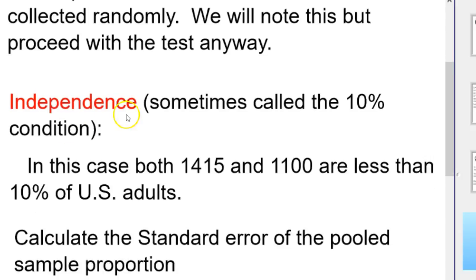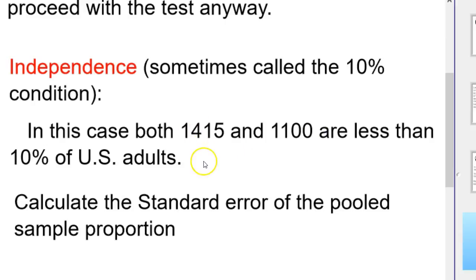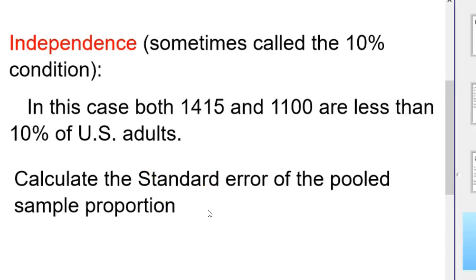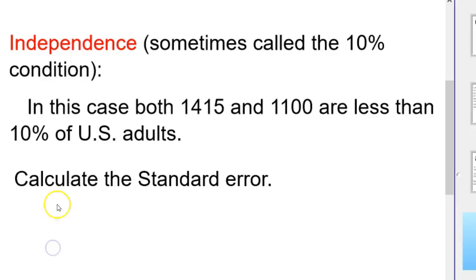We're going to check the independence, sometimes called the 10% condition. And in this case, both 1415 and 1100, so 1415 and 1100 are less than 10% of U.S. adults. And so at this point, notice I had to make a quick change on that, but we're going to calculate the standard error.